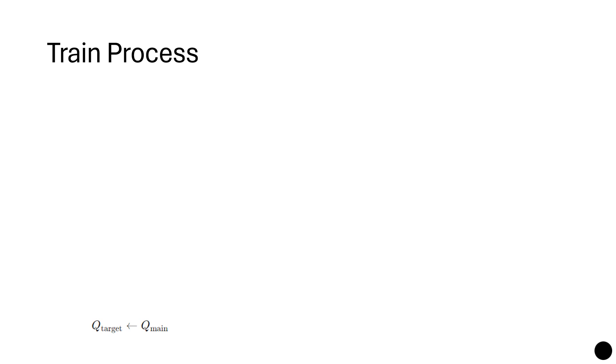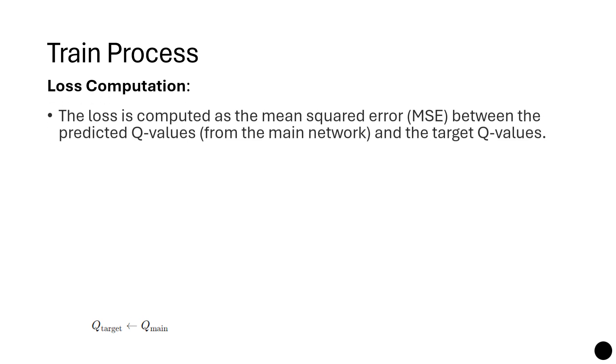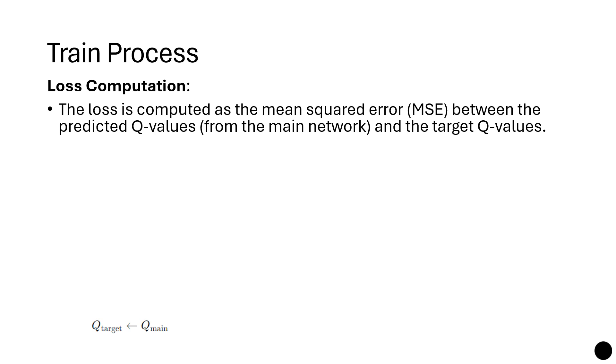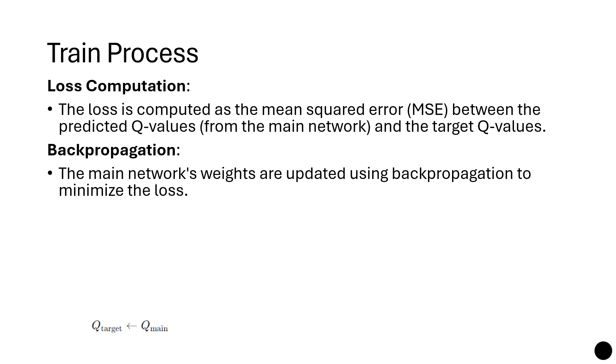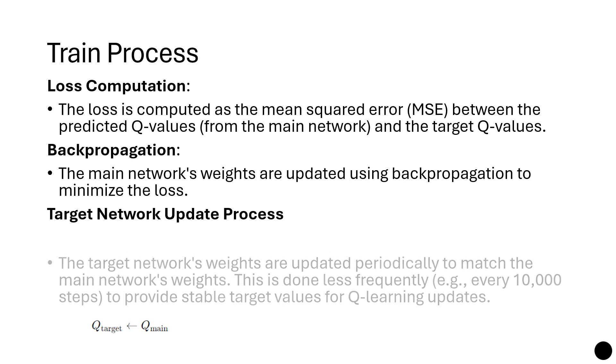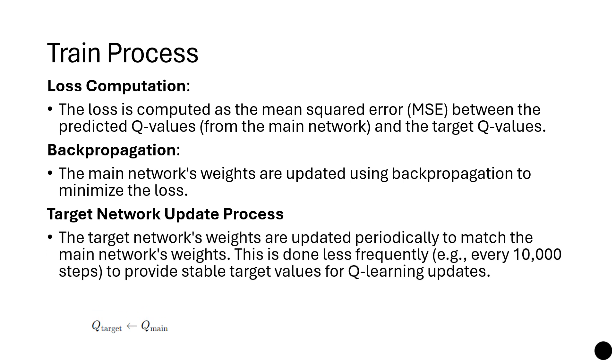How is the training process? The loss is computed as the mean squared error between the predicted Q value from the main network and the target Q values. Then we have backpropagation, so the main network's weights are updated using backpropagation to minimize the loss. And then later, depending on the frequency you set up, the target network weights are updated periodically to match the main network's weights. This is done less frequently, for example every 10,000 steps, to provide stable target values for Q-learning updates. The update rule for the target network is simple: Q_target ← Q_main.